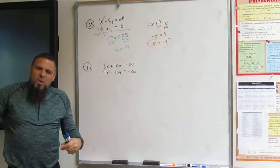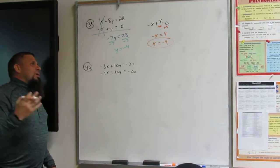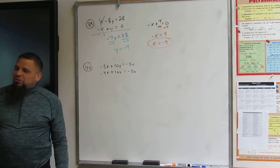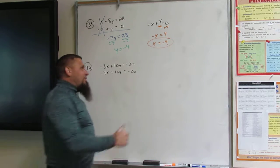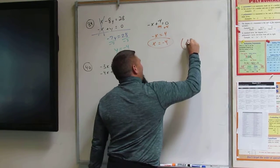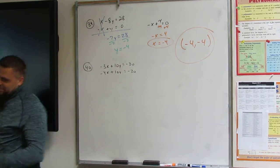And negative 4 is going to be x and the y is going to be negative 4. And so the intersection is at negative 4, negative 4. Or 0. That is 0.